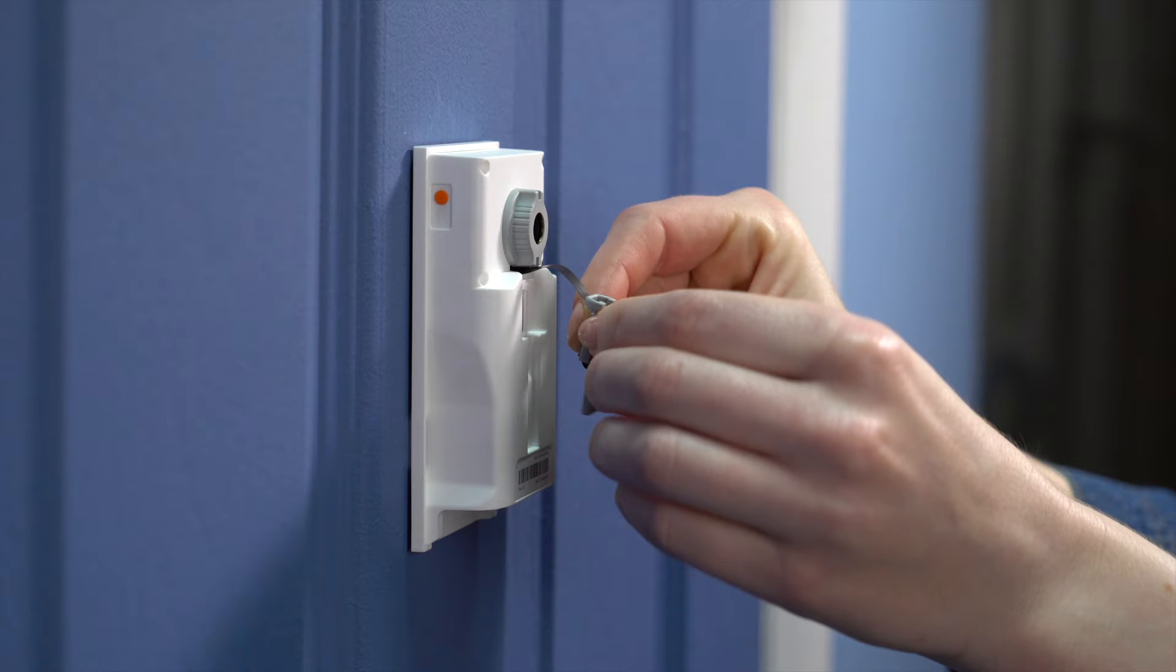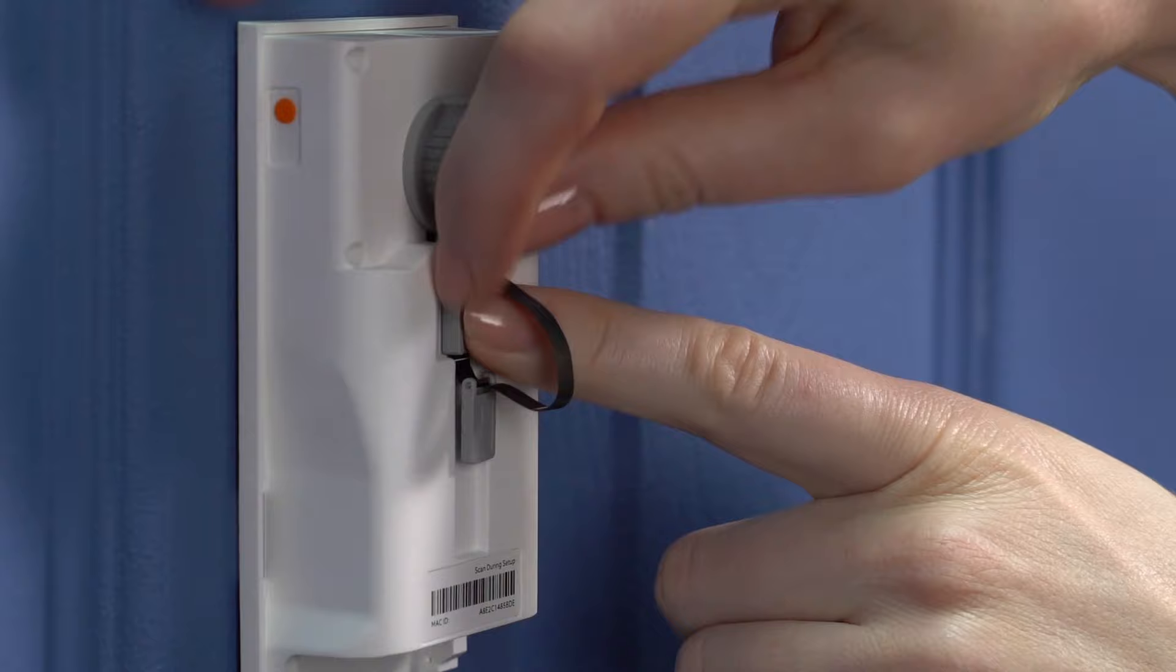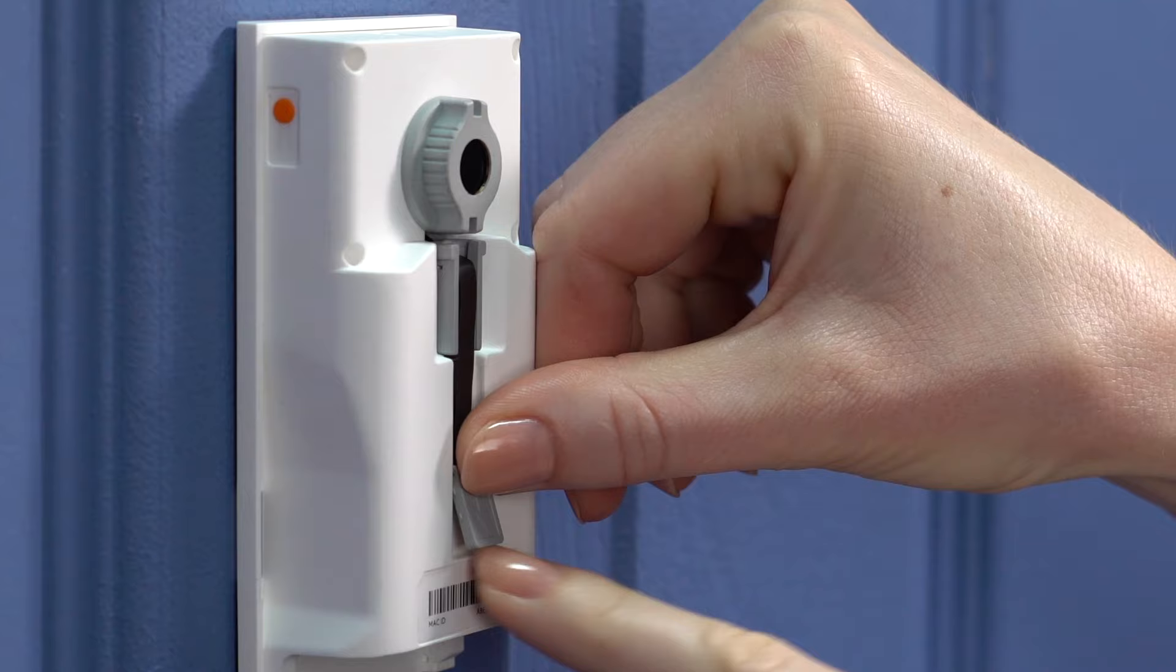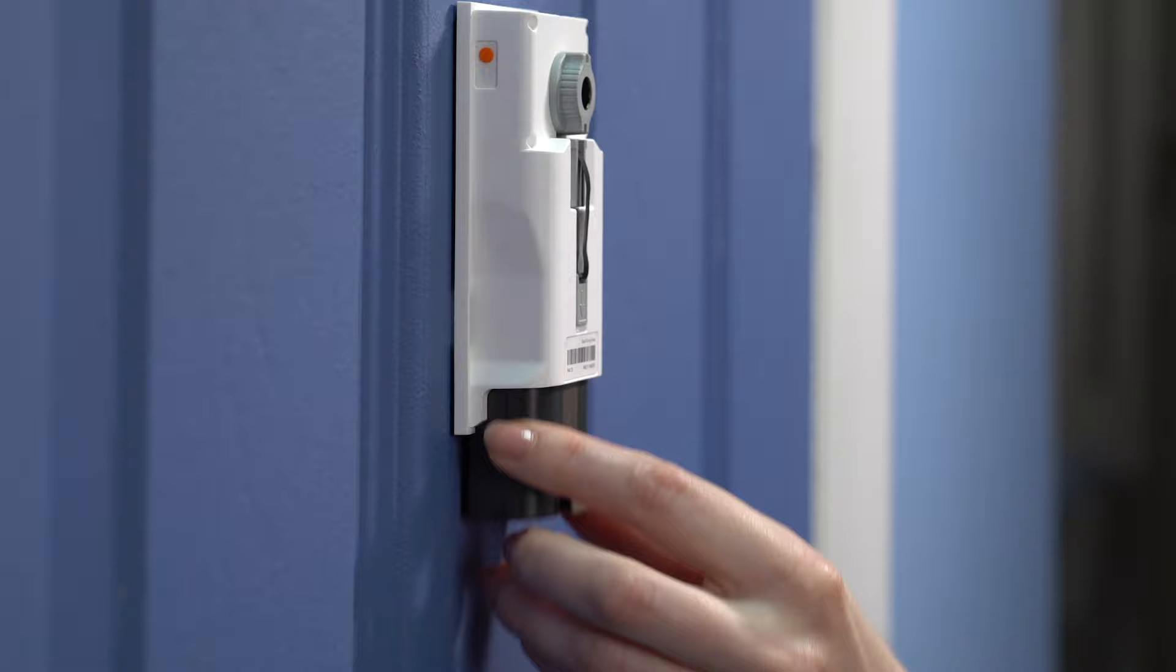Next, firmly press the connector into the port, ensuring it's connected. Then, guide the tab into the channel and slide it down to secure the remaining slack in the cable. Slide the battery into the compartment. There will be a click when the battery is secure.